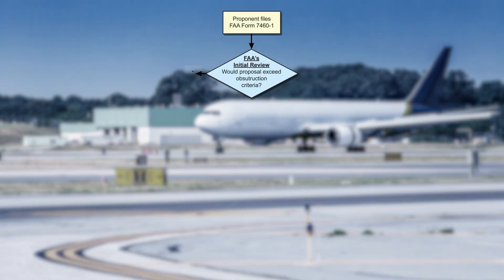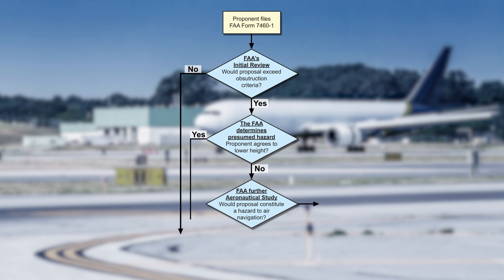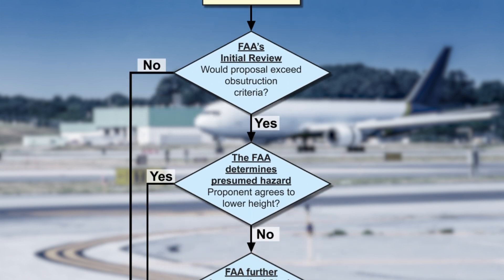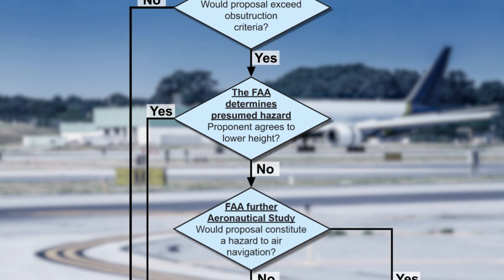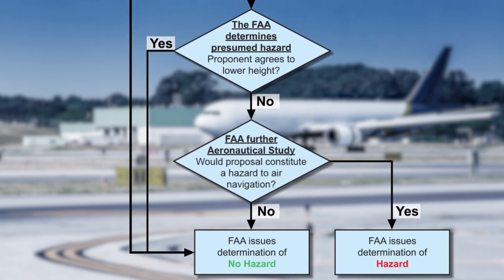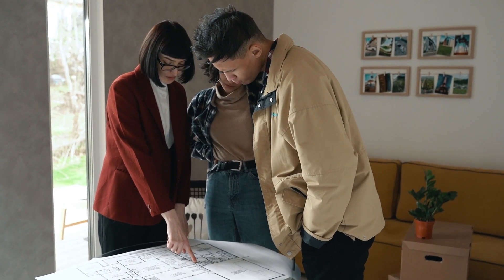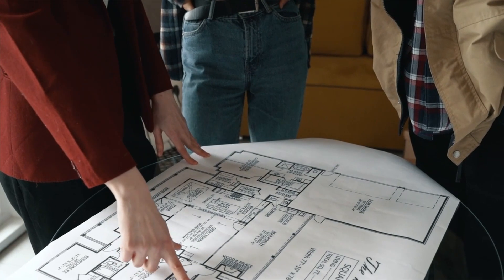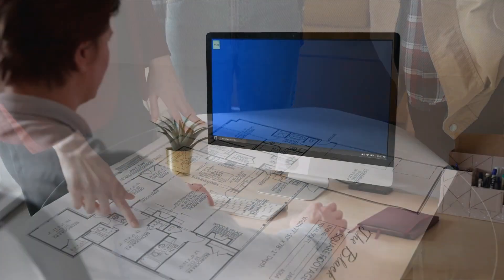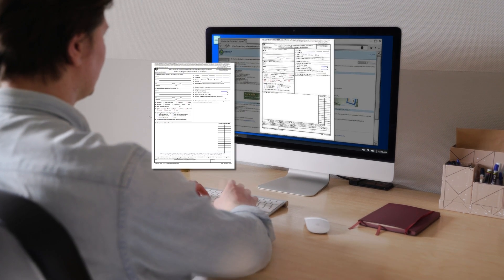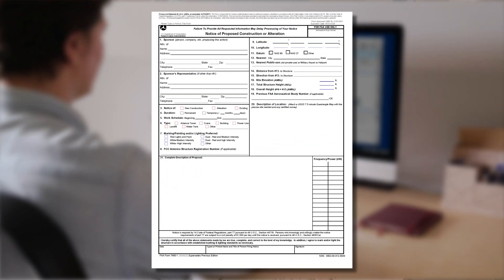When proponents of a project begin their planning, they inform the FAA of their plans by completing and submitting FAA Form 7460-1, Notice of Proposed Construction or Alteration. This initiates the FAA's review process. File FAA Form 7460-1 as early as possible in the preliminary stages of the project when the location and height of the proposed structure are known. FAA Form 7460-1 is located on the FAA's Obstruction Evaluation and Airport Airspace Analysis website at oetriplea.faa.gov.